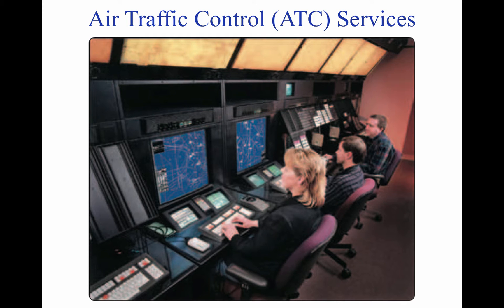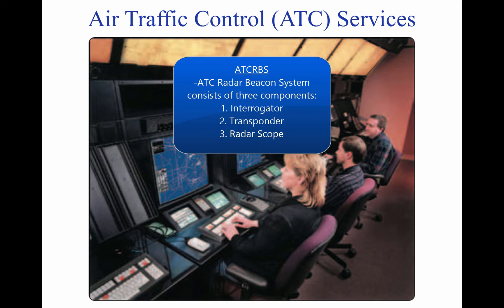ATC Radar Beacon System, ATC-RBS, is often referred to as secondary surveillance radar. This system consists of three components — an interrogator, transponder, and radar scope — and helps alleviate some of the limitations associated with primary radar. The advantages of ATC-RBS are the reinforcement of radar targets, rapid target identification, and a unique display of selected codes.